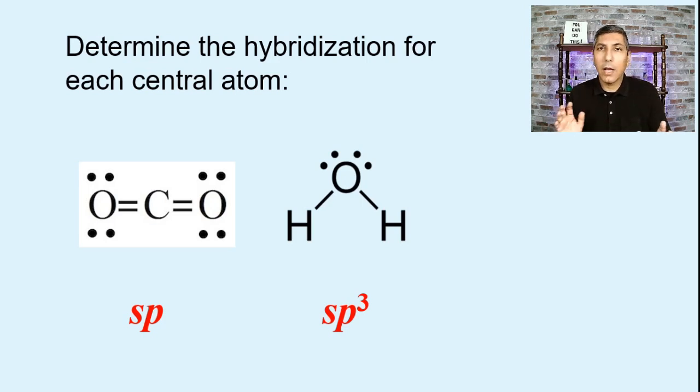By the way, if the concept of sigma bonds confuses you, you don't have to count sigma bonds unless you want to. You can also just count up the number of atoms that the central atom is bonded to. That actually works as well. So if you have in this first example here, we have the carbon bonded to two atoms plus zero unshared pairs. You still get the two. You still get the same SP hybridization. You can do that as well.